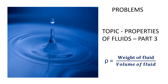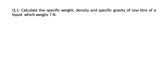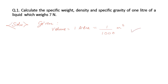This is the third part of our series on properties of fluids, where we will discuss some more problems. In the first question, we have to find the specific weight, density, and specific gravity of one liter of liquid which weighs seven newton. Given that volume is one liter, we convert this to meter cube, and the weight given is seven newton.